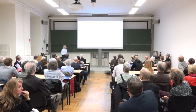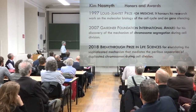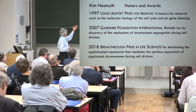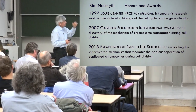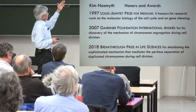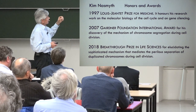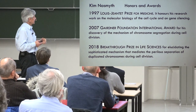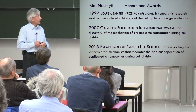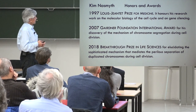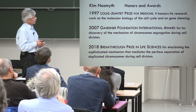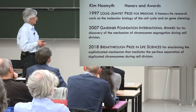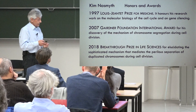Kim was honored. In 1997 he received the Louis Jeantet Prize, honoring his research on the molecular biology of the cell cycle and mating-type switching. In 2007, the Wiley Foundation International Award for his discovery of the mechanism of chromosome segregation during cell division. And the 2018 Breakthrough Prize in Life Sciences — the Silicon Valley Nobel Prize — for elucidating the sophisticated mechanism that mediates the precise separation of duplicated chromosomes during cell division.